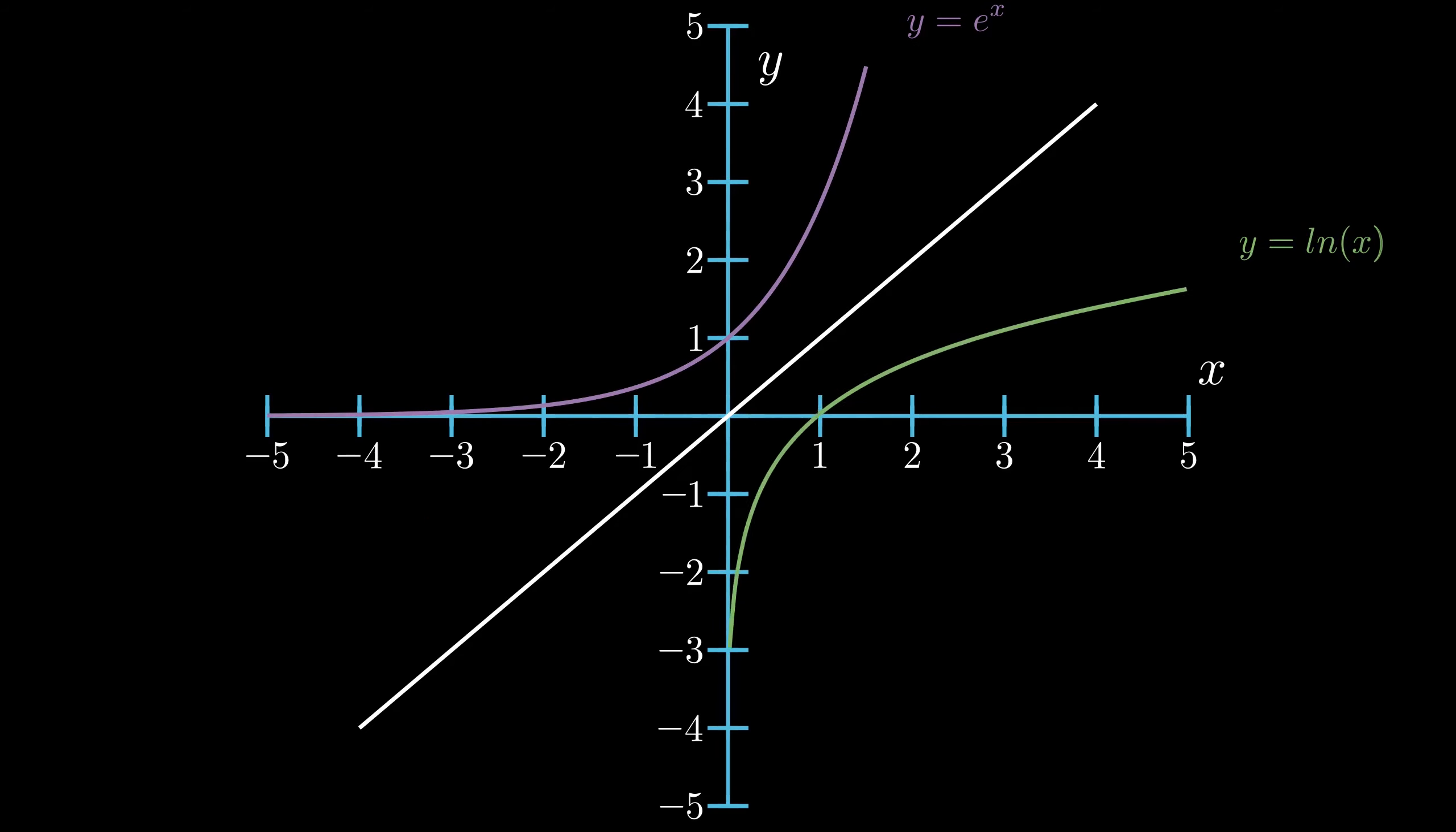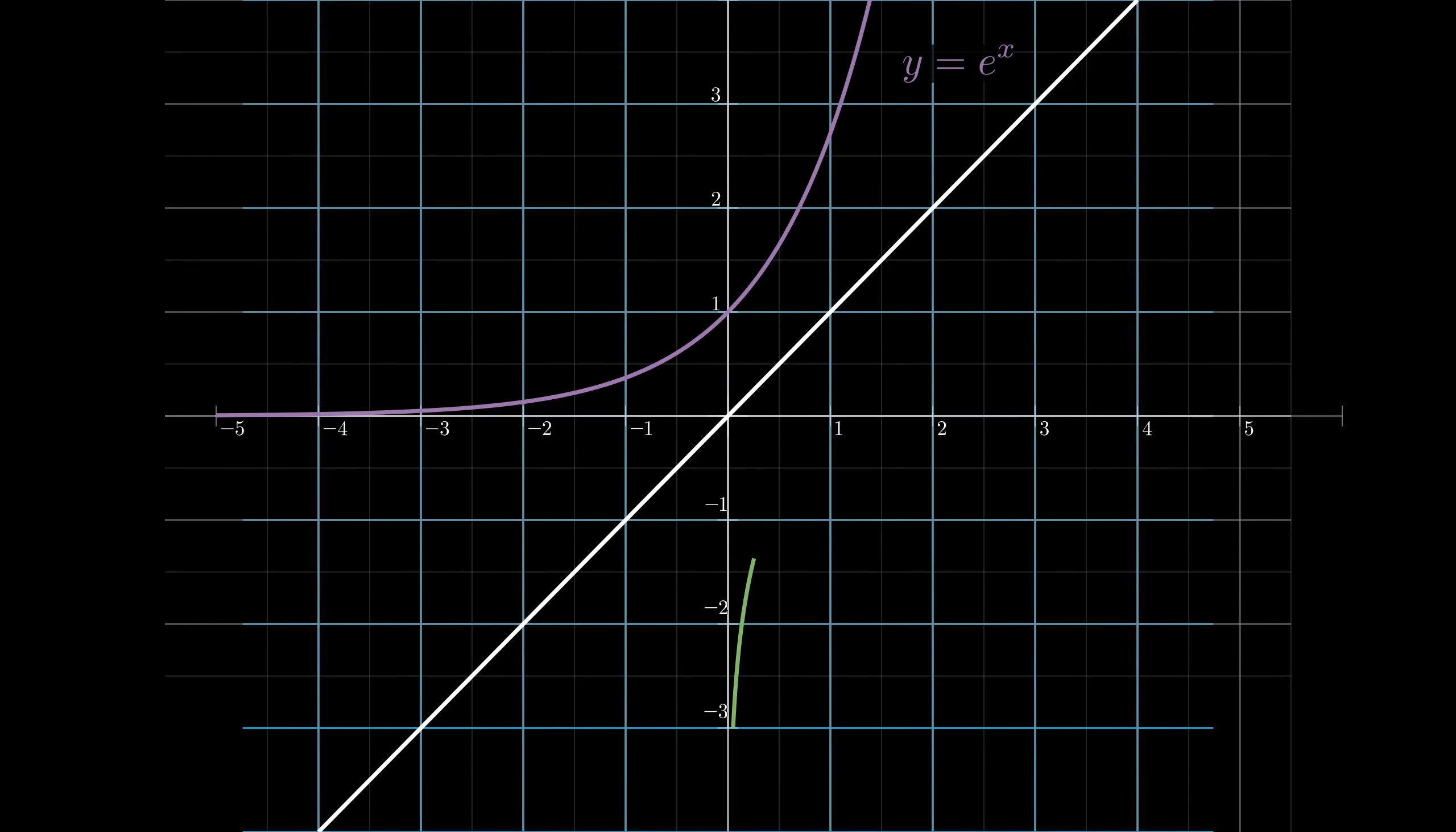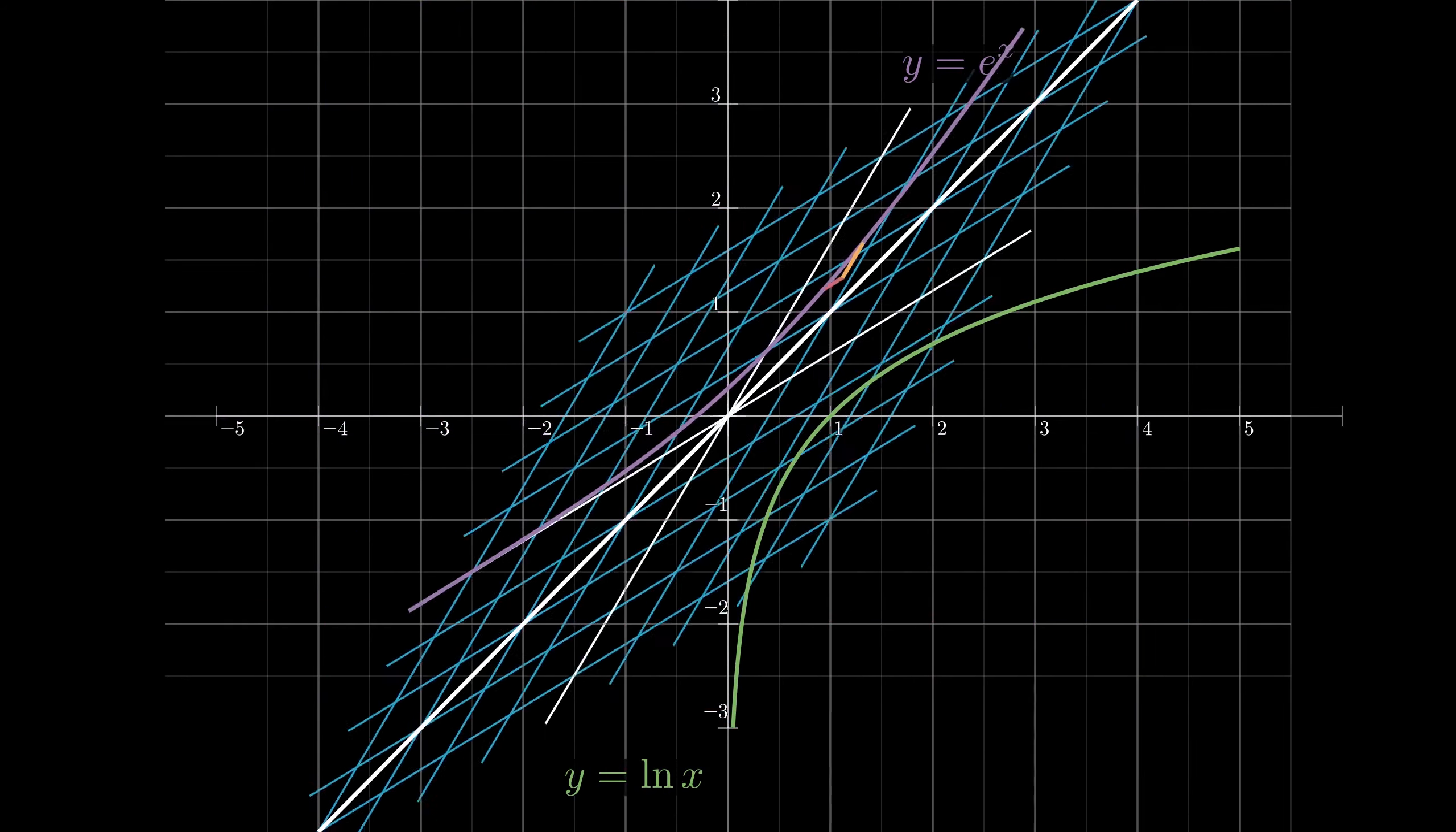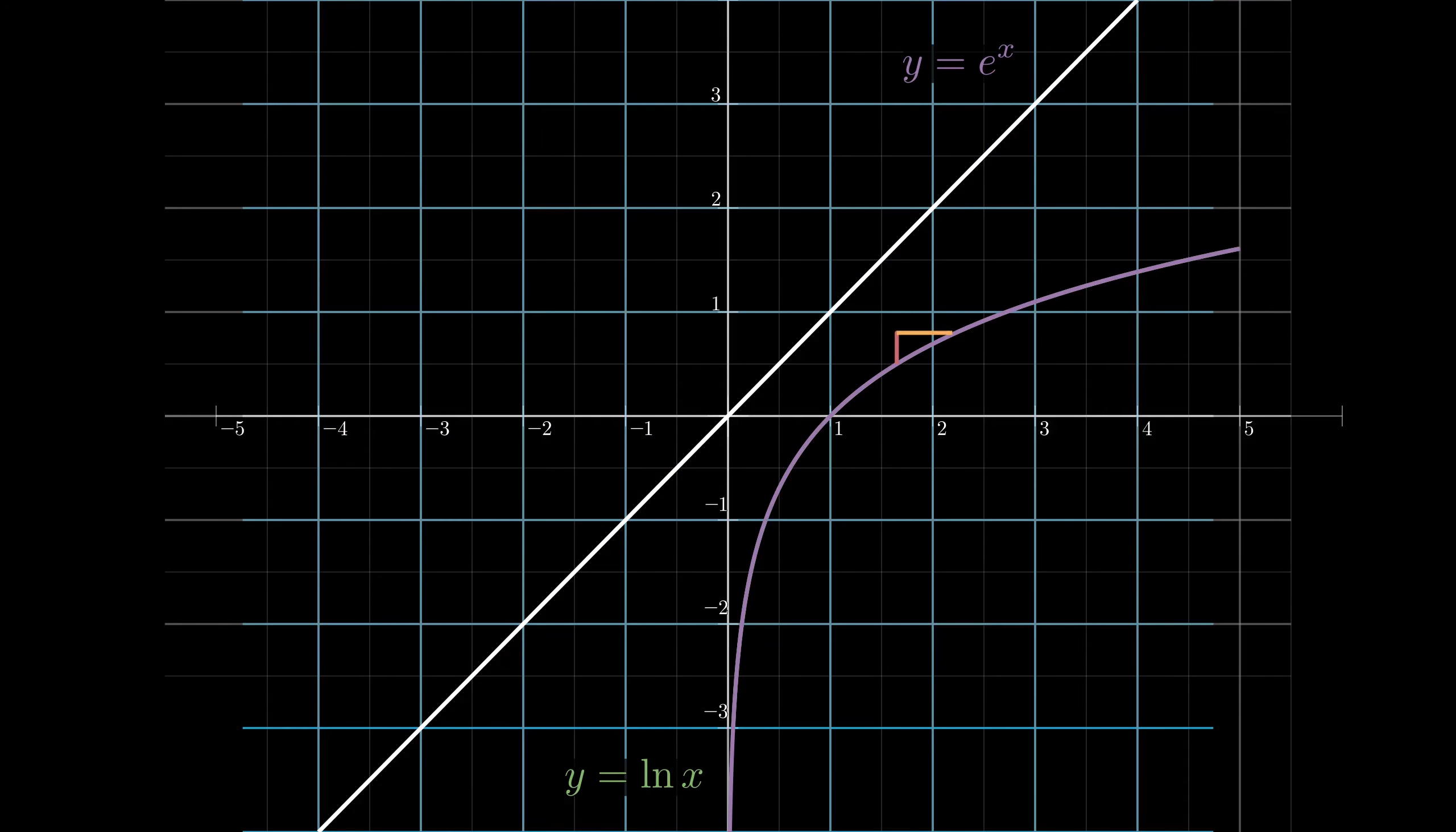To really get a good feel of why logs take their shapes, it's important to remember the inverse relationship with an exponential function. This inverse relationship is geometrically equivalent to flipping it over the line y equals x, which is really cool to see. It also explains why the logarithm has a vertical asymptote rather than a horizontal asymptote.